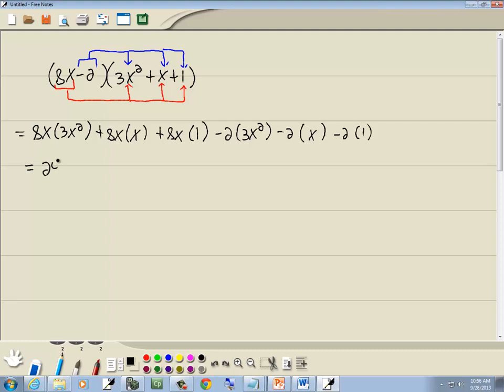8 times 3 is 24, x times x squared is x to the third. 8x times x is 8x squared. 8x times 1 is 8x. Negative 2 times 3 is negative 6x squared. Negative 2 times x is negative 2x. Negative 2 times 1 is negative 2.